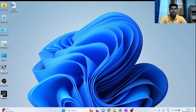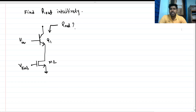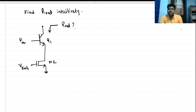Hi everyone, welcome to this session. Today we will be solving a very good interview question. We have to find the looking-in impedance from node A, and here it is mentioned as R_out. We are going to do the intuitive analysis.